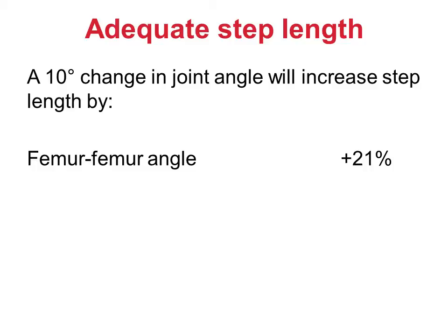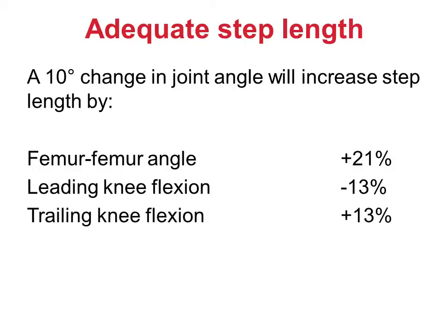If you want a decent stride length, you really have to extend and flex your hips. Flexing the leading knee reduces the step length by a little less than half as much as reducing hip flexion by the same amount. Flexing the trailing knee increases step length by a similar amount. Allowing the trailing heel to rise has a small effect, but not very much in comparison to the knee and hip joint angles.